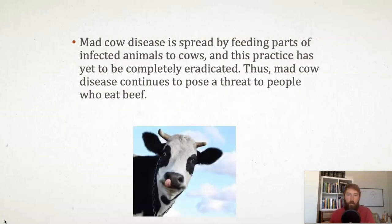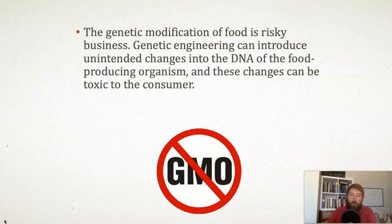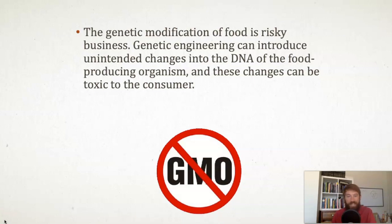Here's an example of an argument with an explicit inferential claim because of the word 'thus' in the last sentence. 'Thus' is a conclusion indicator, and since any argument that includes indicator words has an explicit inferential claim, this argument also has an explicit inferential claim. In another example there are no indicator words, and the conclusion is the first sentence: 'The genetic modification of food is risky business,' followed by two reasons — it could introduce unintended changes into the DNA, and those changes can be toxic to the consumer. The conclusion can come anywhere in the argument: first sentence, last sentence, or anywhere in between. Since there are no indicator words, the inferential claim is implicit.